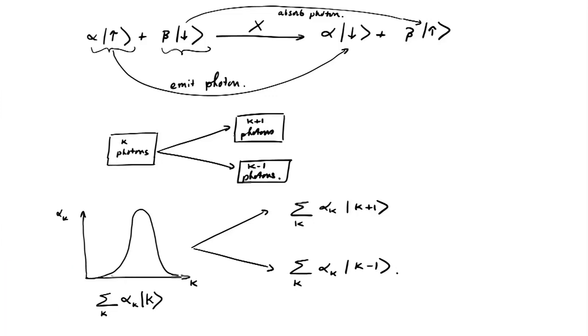So in the one case, what happens is that this Gaussian shifts left. So it shifts over to the left by one position. In the other case, what happens is that this Gaussian shifts right by one position.